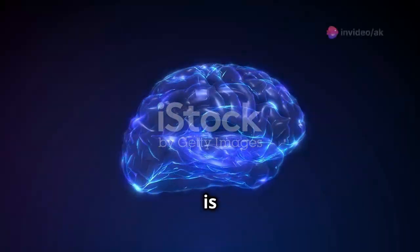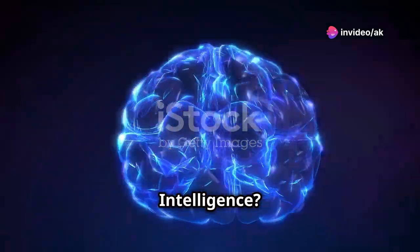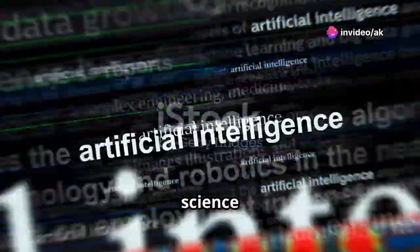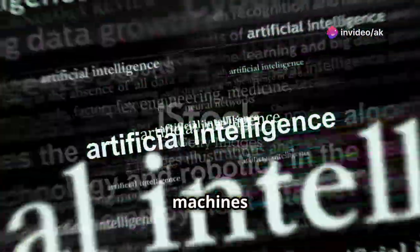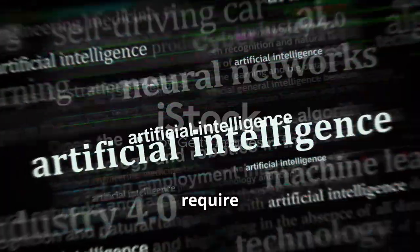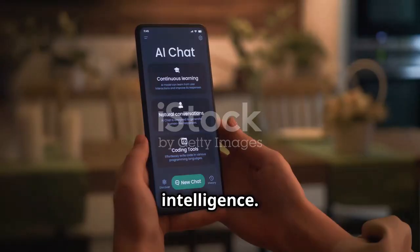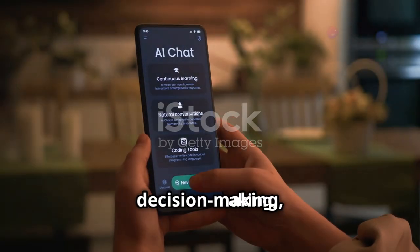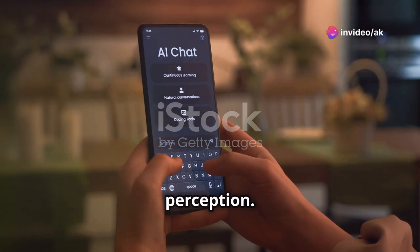First, what is artificial intelligence? AI is a branch of computer science dealing with the creation of smart machines capable of performing tasks that typically require human intelligence. Think of things like speech recognition, decision making, and even visual perception.